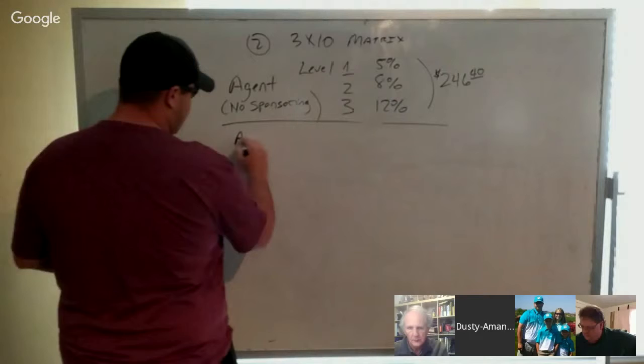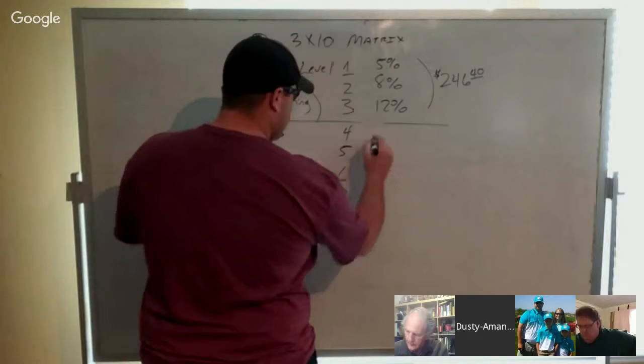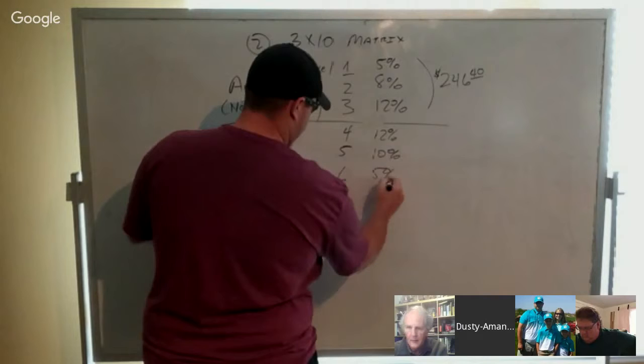So as an agent three, that opens up levels four, five, six, and seven. These levels pay 12%, 10%, 5%, and 5%.